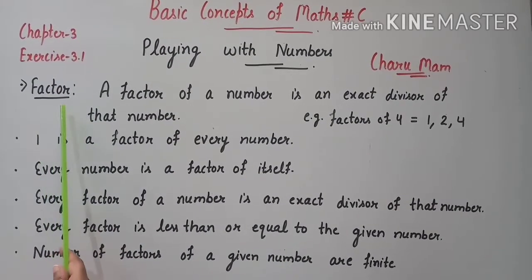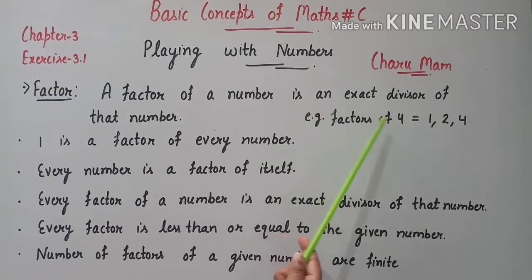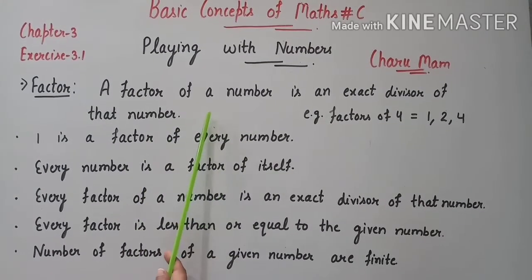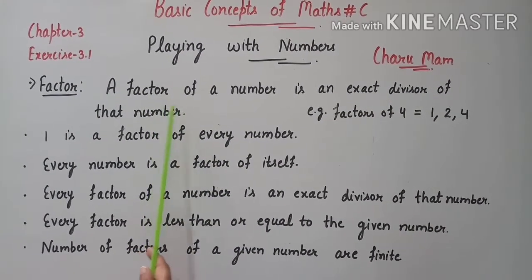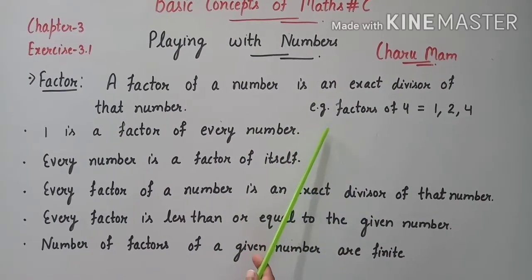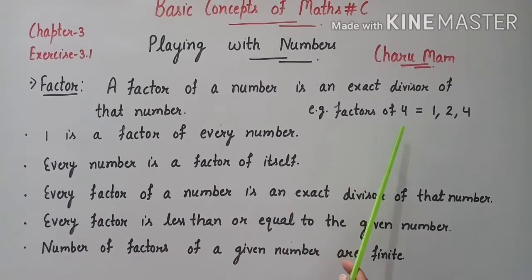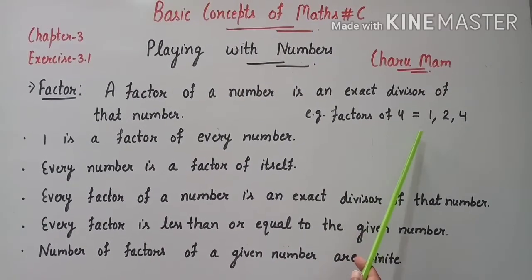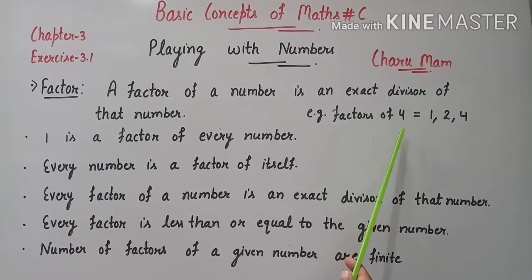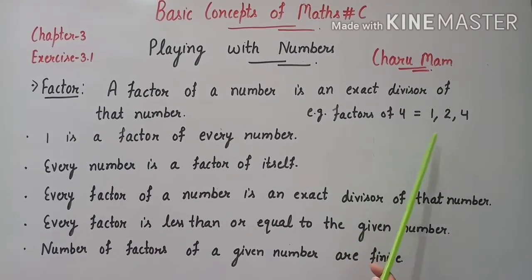First, we will discuss about factors. A factor of a number is an exact divisor of that number. Which means, if we want to find out the factors of any number, then the factor will be an exact divisor. For example, the factors of 4 are 1, 2, and 4. Now 1 and 2 are exact divisors of 4.